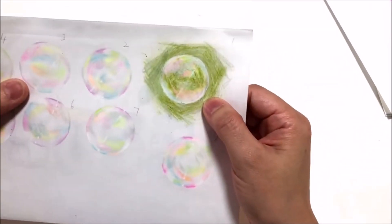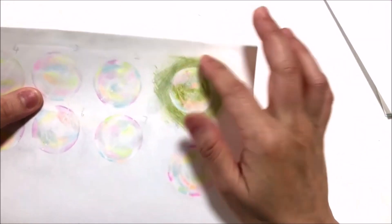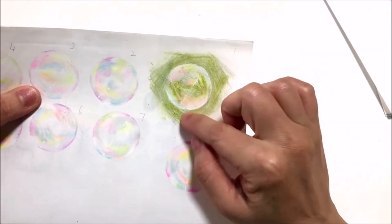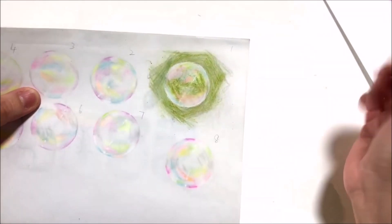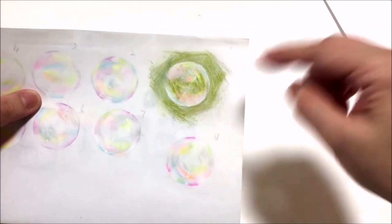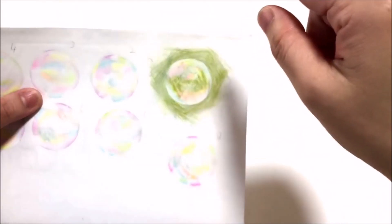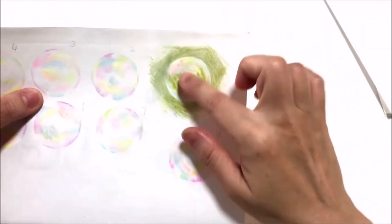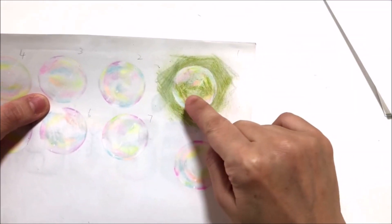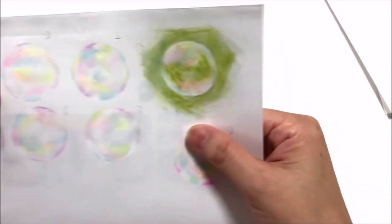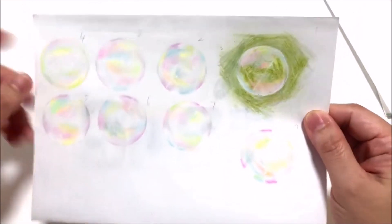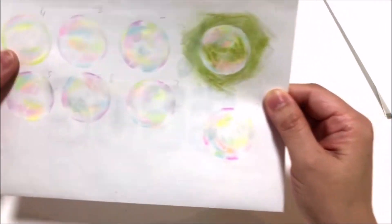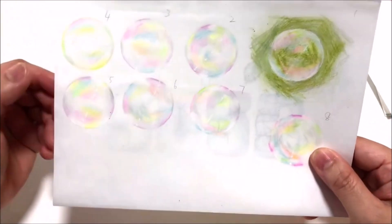And for this one I painted the background green because usually you see bubbles outdoors and in a park, so the background is usually green. Then I tried to draw on a white background.